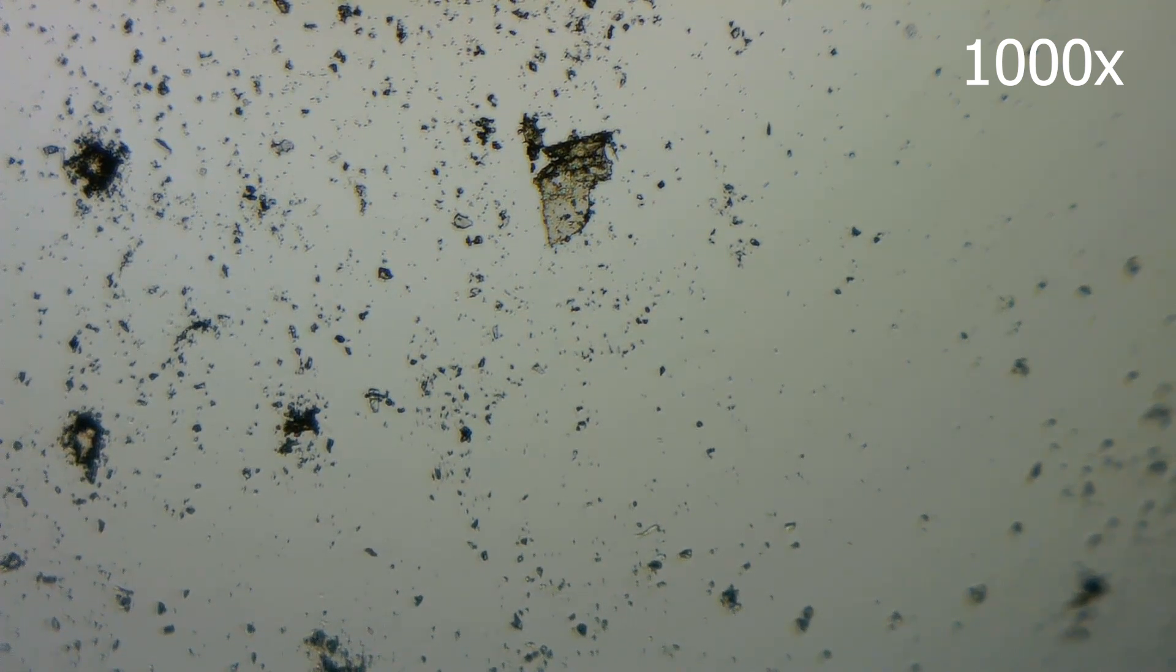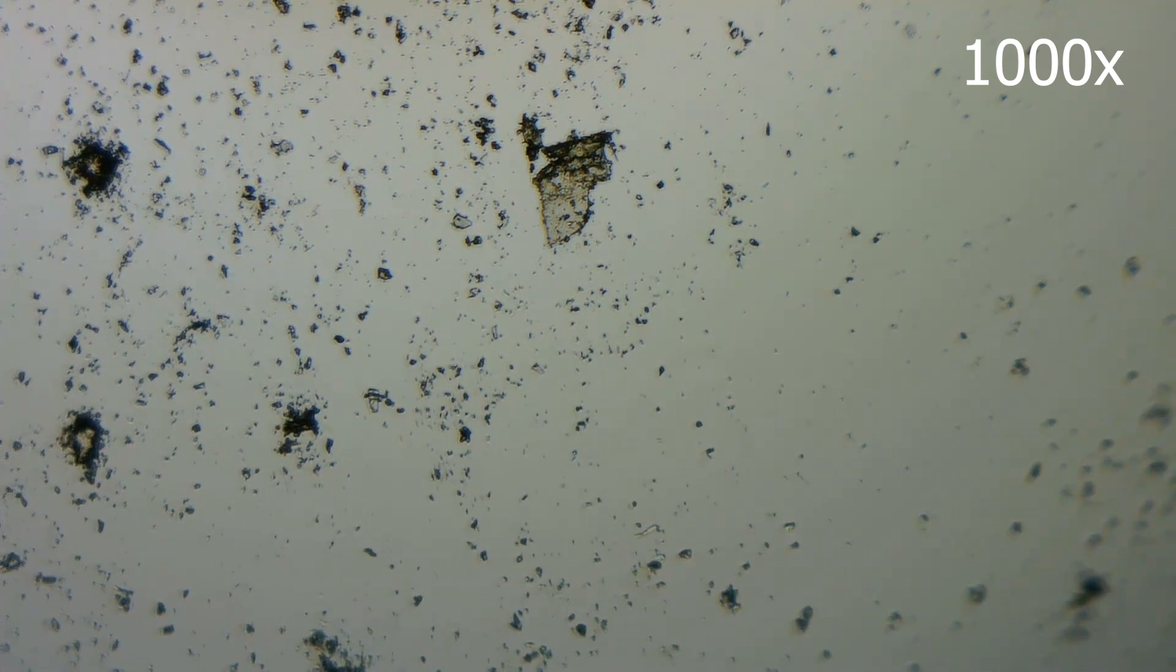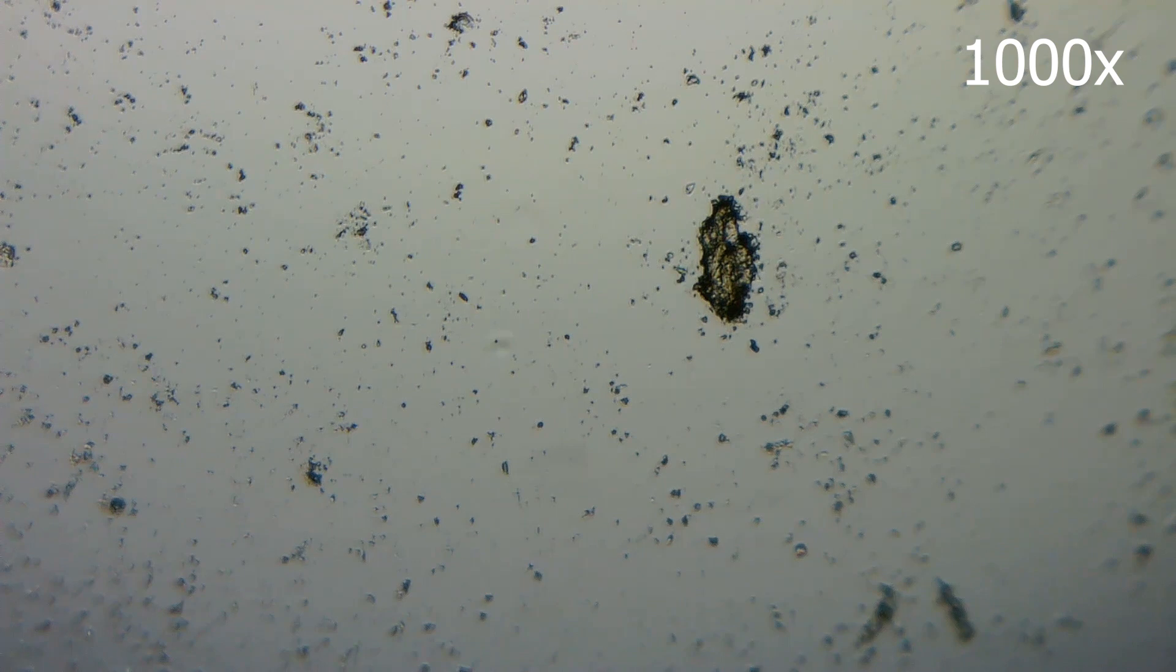Invasive Aspergillosis is the most severe form of Aspergillus infection and primarily affects individuals with compromised immune systems, such as transplant recipients or those undergoing chemotherapy. The fungus can invade blood vessels and spread to other organs, leading to life-threatening complications.